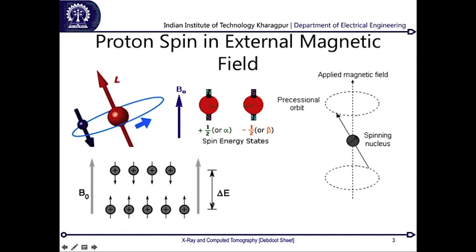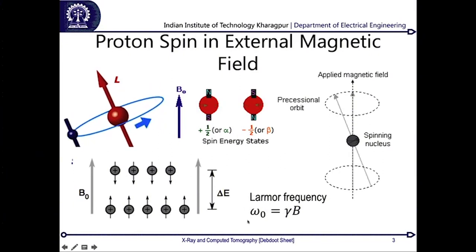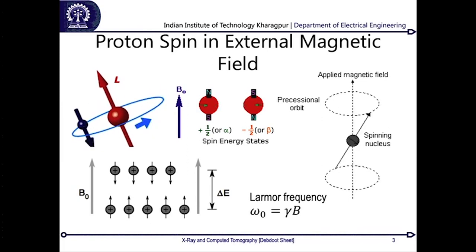There is a total energy difference called delta E between the aligned and anti-aligned states. When a magnetic field B-naught is applied, spinning nuclei rotate at a particular frequency called omega-naught, also called the Larmor frequency. This frequency is proportional to gamma, the gyromagnetic ratio of that nucleus. Every atom's nucleus has its own gyromagnetic ratio — if there is an odd number of electrons, it will have a characteristic gyromagnetic ratio. By applying a magnetic field and observing the frequencies, you can identify which atom is present. This is the concept of Nuclear Magnetic Resonance (NMR).